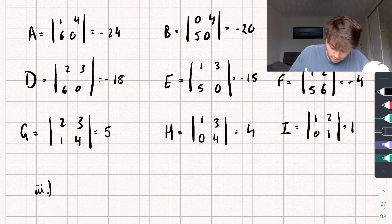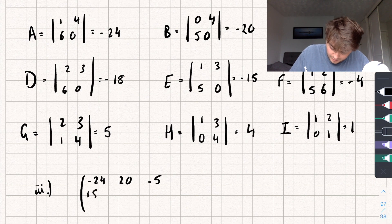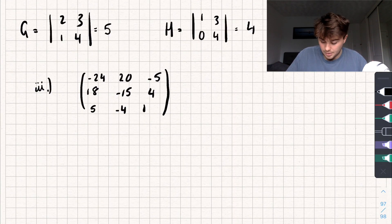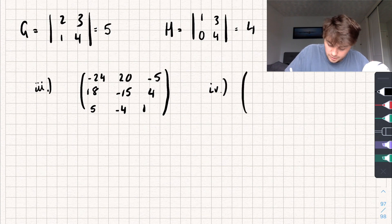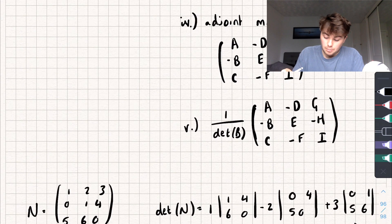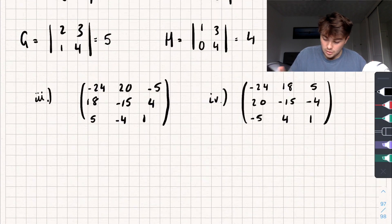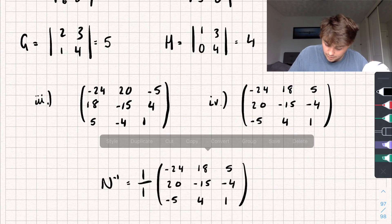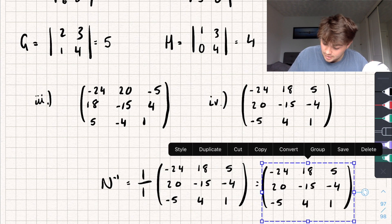So we're finding the cofactor matrix: A, negative B — so 20 — C, negative D, E, negative F, G, negative H, and I. From here we find the adjoint matrix, which is the transpose of the cofactor matrix. Transposing it gives the matrix: negative 24, 20, negative 5 in the first row; 18, negative 15, 4 in the second; 5, negative 4, 1 in the third. The last step is to multiply by 1 over the determinant. Since the determinant is 1, the inverse of N equals the adjoint matrix itself.